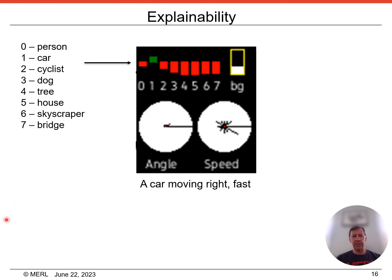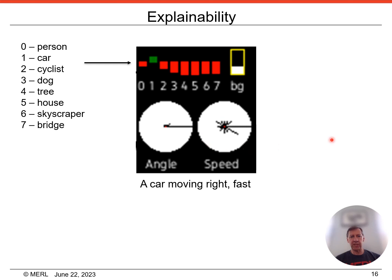Now I'll describe our method's explainability. We use the graphical panel shown here to visualize the various high-level attributes estimated for a video volume. The bar graph at the top left shows the sigmoid output for each object class. The eight object classes ordered from left to right are: person, car, cyclist, dog, tree, house, skyscraper, and bridge. Outputs above 0.5 are colored green and indicate the likely presence of the class, and outputs below 0.5 are red and indicate absence of the class. The bar graph at the top right shows the estimate of the fraction of stationary pixels — all white indicates no motion, and all black indicates every pixel in the video volume is moving. The direction of motion histogram is visualized at the bottom left, where the length of a ray is proportional to the fraction of pixels estimated to be moving in each of the 12 directions of motion. Finally, the bottom right visualizes the average speed of pixels moving in each of the 12 directions of motion.